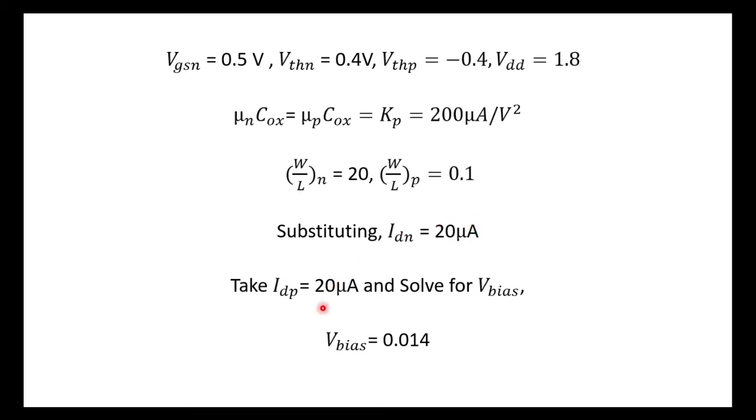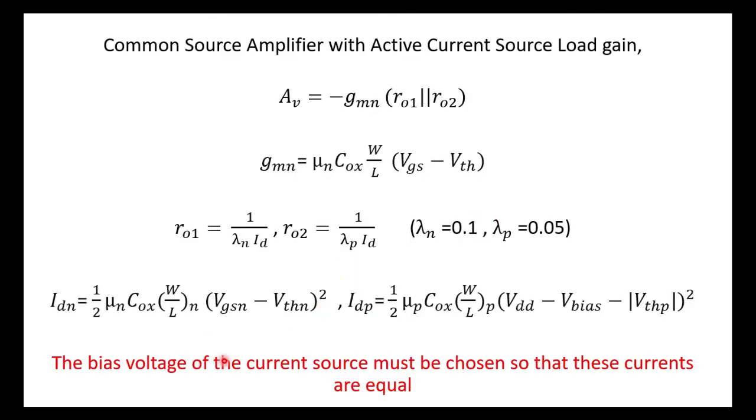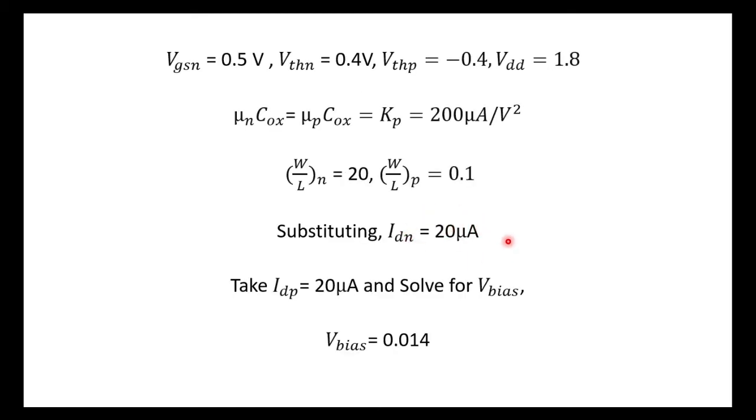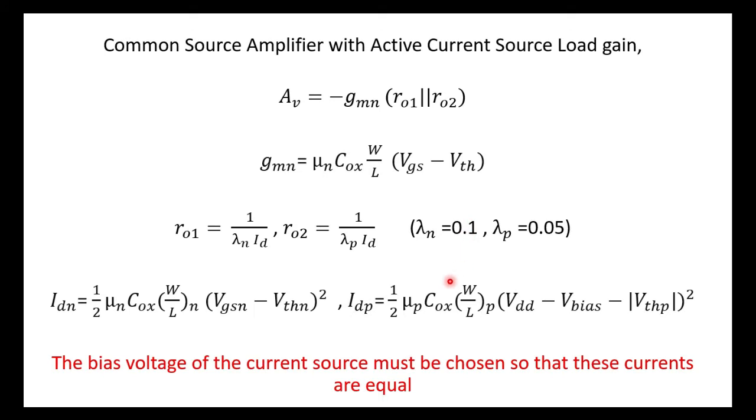And I have to take this 20 microamperes. See this sentence: the bias voltage of the current source must be chosen so that these currents are equal. The Idp and Idn should be equal to Id. It should be a single current in the entire circuit. So what I need to do is once I calculate Idn, I have to put this Idn in this Idp place and I have to calculate what is Vbias.